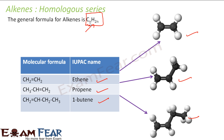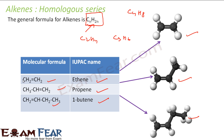We put n=1, this becomes CH2 — it is very unstable, so we don't consider that. We put n=2, this becomes C2H4, that is ethene. We put n=3, this becomes C3H6, that is propene. We put n=4, this becomes C4H8, that is butene. So it is ethene, propene, and butene.